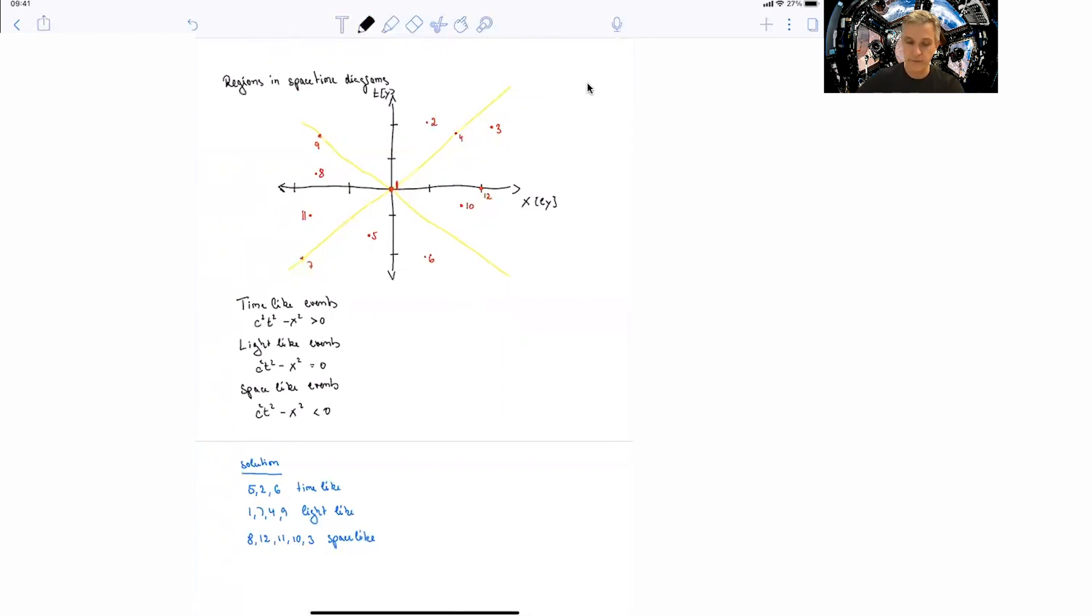So one of the things you can find, if you are starting here in the origin and you want to correspond to any event in the future, you can only do that if the events are time-like. If the events are space-like, you will not be able to correspond between those two events. That's one of the ways to read this kind of space-time diagram.